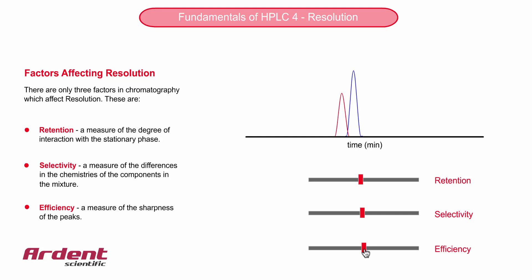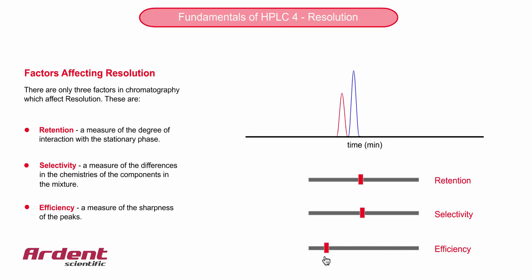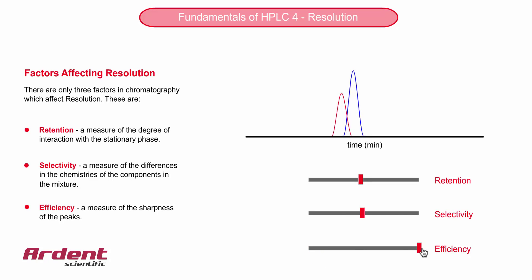Efficiency is a measure of the width of the peak at a given retention time. The sharper the peaks, the better the resolution. For the tourists, better efficiency would result from keeping together as a tight-knit group as they enter and exit the shops many times.